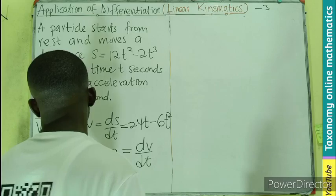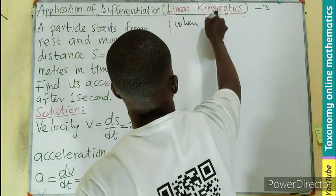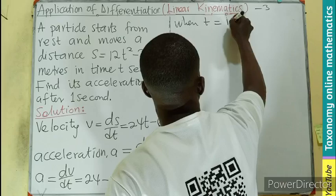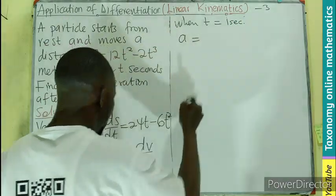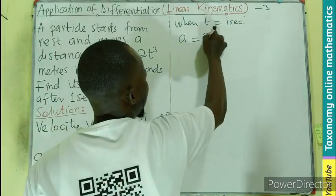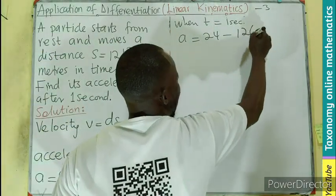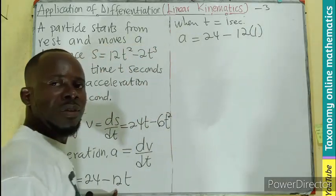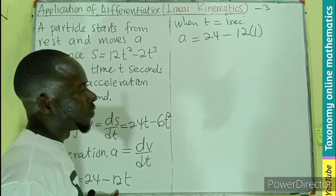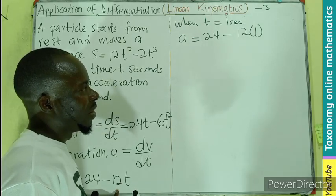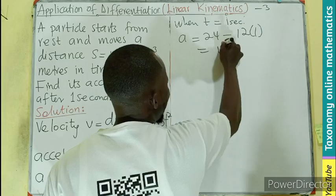So we are looking for acceleration after 1 second. So when T equals to 1, we can have our acceleration to be equal to 24 minus 12 times 1. So 12 times 1 will be 12. 24 minus 12 will also give us 12.